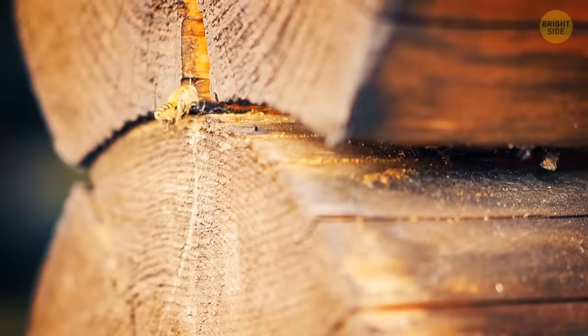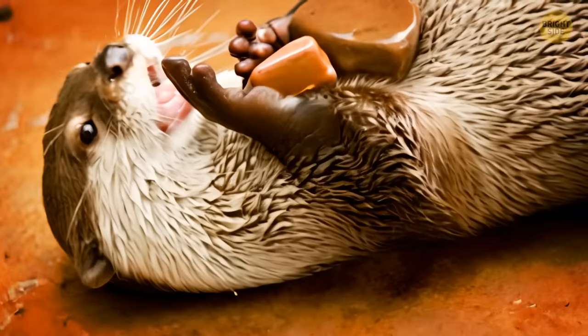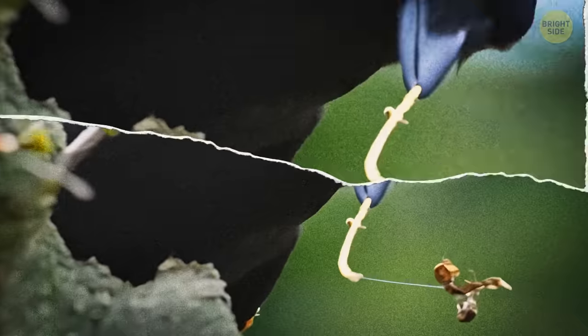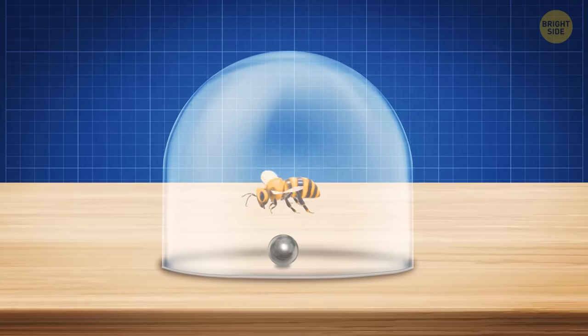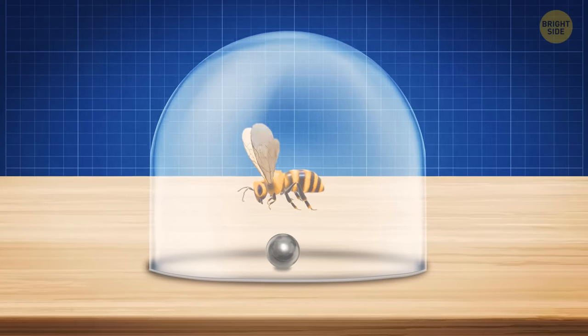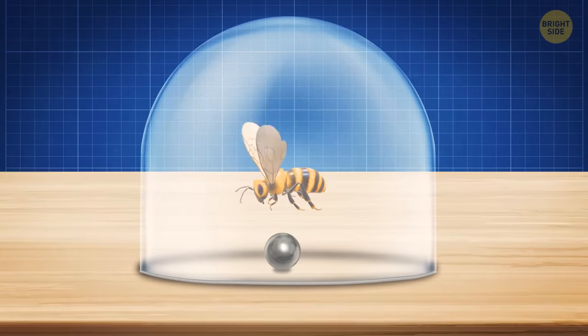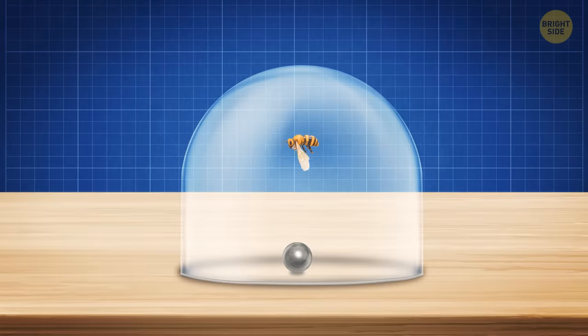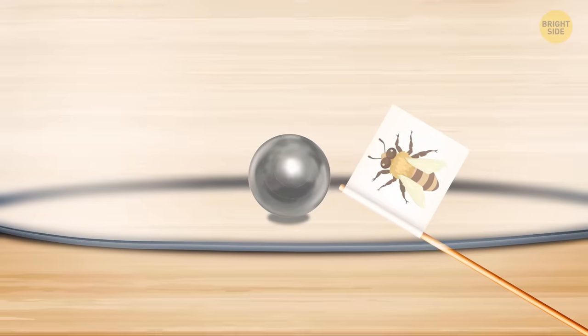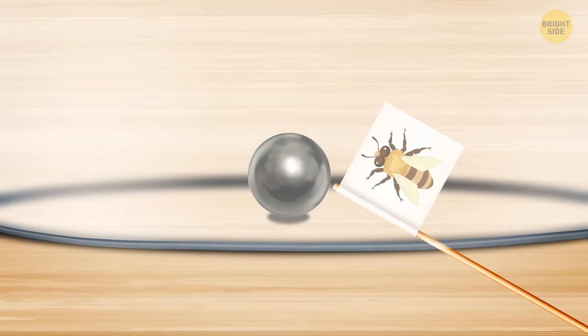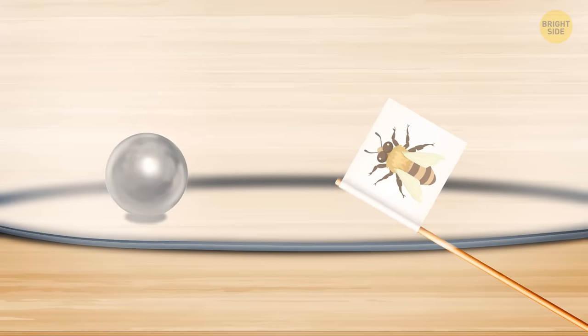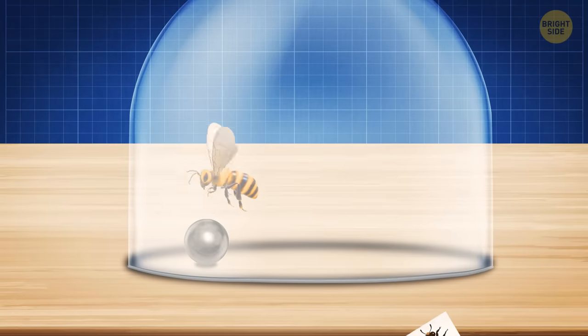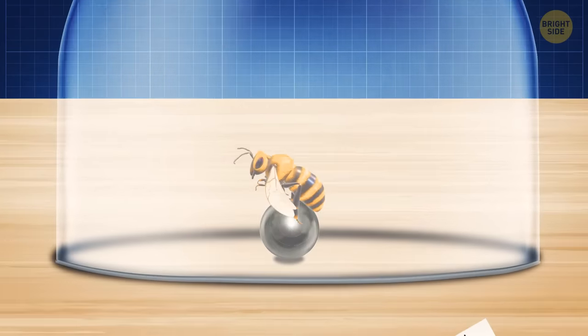Bees can even be taught to use tools, a skill previously thought to be limited to certain mammals, birds, and other creatures. They devised a test where bees had to move a tiny ball to the center of a platform to get a sweet reward. Bees don't do stuff like this in the wild, so biologists had to teach them. Using a plastic bee on a stick, the researchers demonstrated the task to the bees. After a few days of training, the bees began dragging the ball to the center all by themselves.